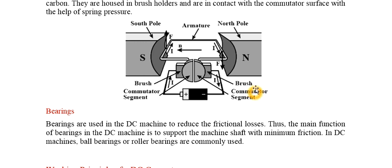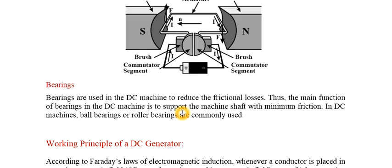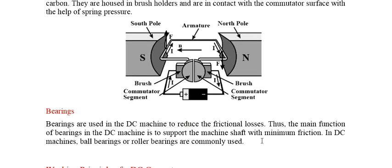In the diagram you can see the south and north poles, armature conductors, commutator, and brushes. Bearings are used to reduce frictional losses. The main function of bearings in DC machines is to support the machine shaft with minimum friction. Ball bearings or roller bearings are generally used in DC machines.